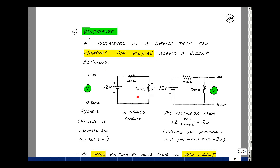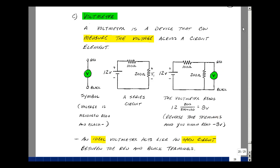If I had this circuit with 12 volts and with 100 and a 200 ohm resistor, and I wanted to measure the voltage across the 200 ohm resistor, I would put the meter in parallel with the 200 ohms. What the meter is going to read is 200 divided by 200 plus 100 times 12. That's 8 volts. If you reverse the terminals, you'd actually read minus 8 volts. An ideal voltmeter acts like an open circuit between the red and black terminals.